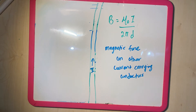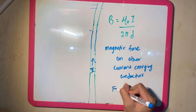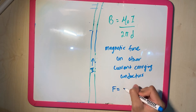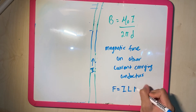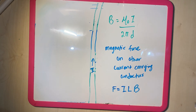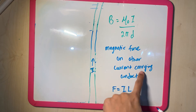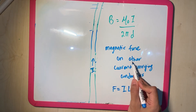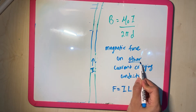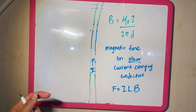The equation is F equals I·L·B, acting on other current-carrying conductors. The keyword here is 'other.'